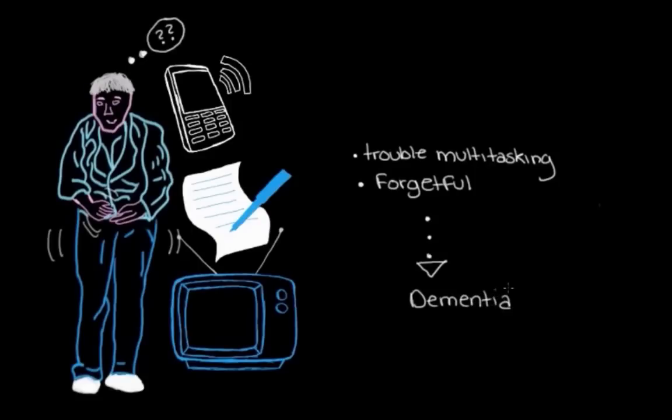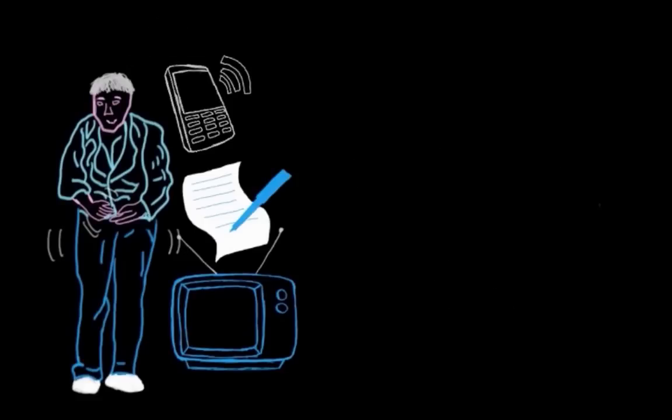So dementia is kind of this general term that we use. And we use it to sort of describe people who are having a lot of trouble with these things like memory and multitasking. And they're having trouble to the point where it really affects their day-to-day life.